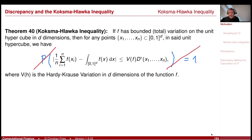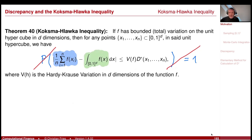This is an error estimate for our Monte Carlo integral. You see, this is the Monte Carlo approximation of the integral, this is the true value of the integral, and this is an error estimate that links the error to the variability of the function and the property of the sequence. This property of the sequence is called the discrepancy.